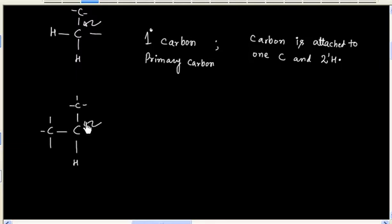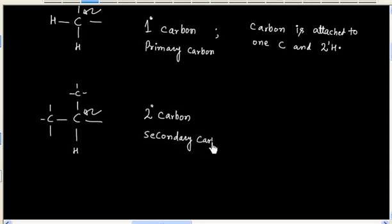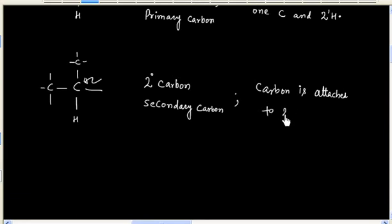Now this carbon is called secondary carbon, or 2 degree carbon. In this case, this carbon is attached to 2 carbons and 1 hydrogen.